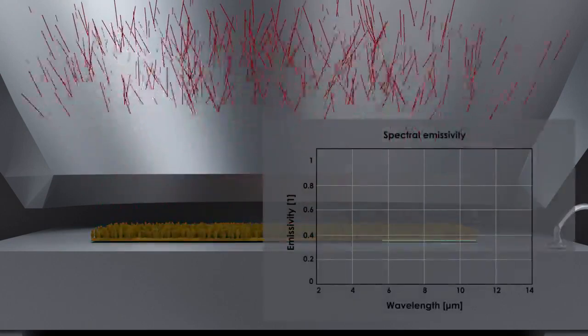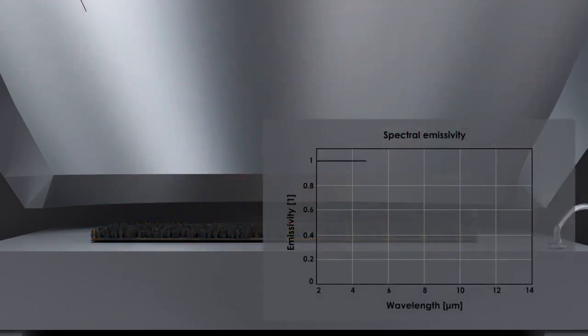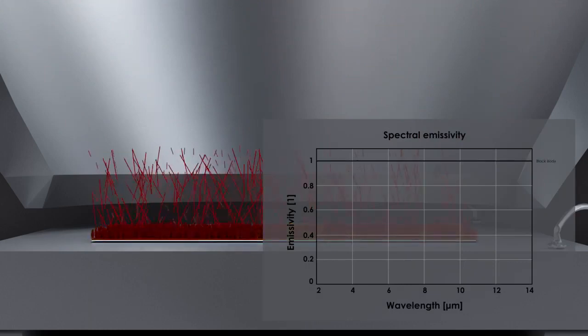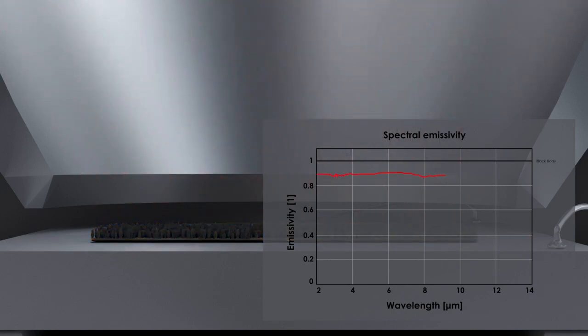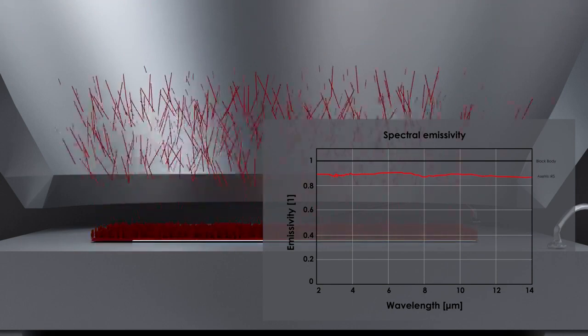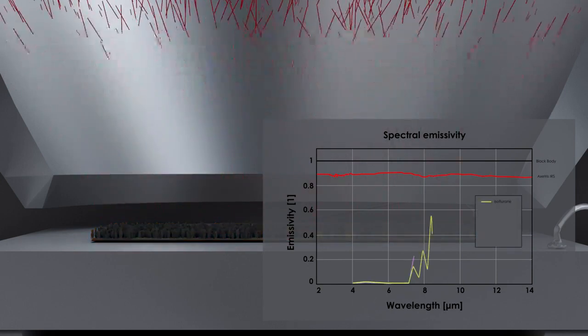For an idealized black body emitter, the emissivity is 100% over the entire infrared wavelength range. In reality, this is not technically feasible. But Exatris infrared sources come very close to this ideal, due to the irregularly structured black platinum layer.